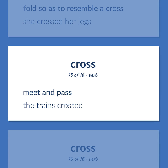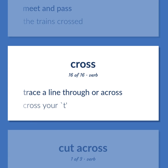Cross (verb): Meet and pass — the trains crossed. Trace a line through or across — cross your T.